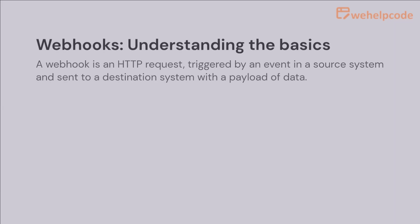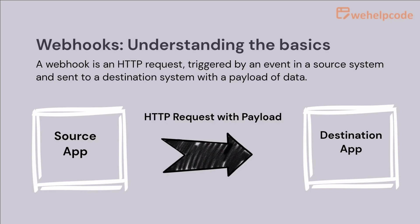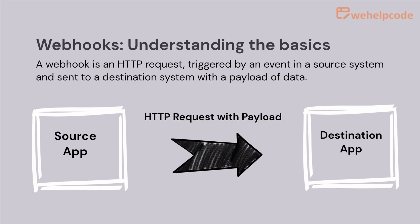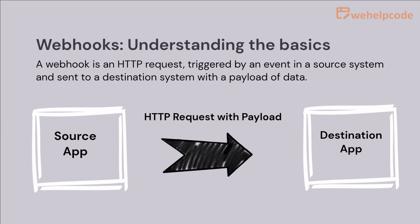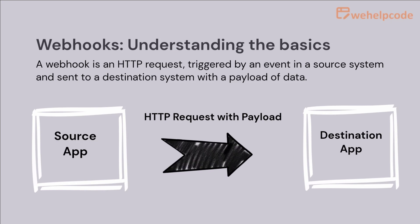A webhook is an HTTP request, triggered by an event in a source system and sent to a destination system with a payload of data. Webhooks are automated, meaning they are automatically sent out when an event is fired in the source system. Here's an analogy to better understand webhooks.